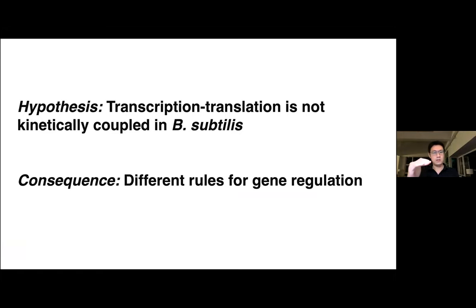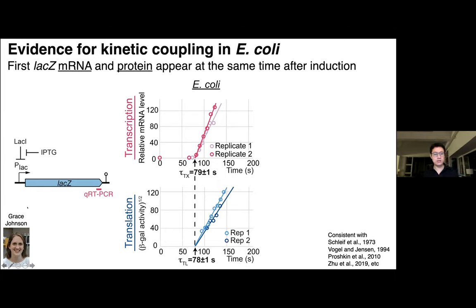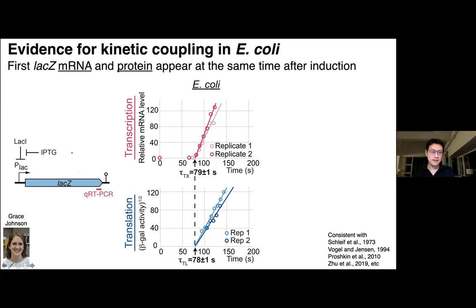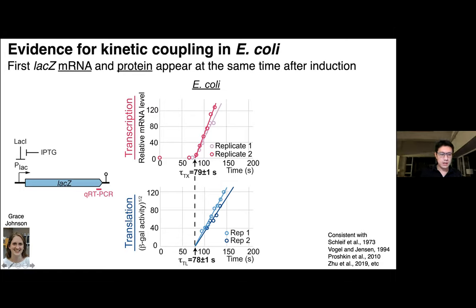I'm going to give you data that confirms these hypotheses and the predictions we made. Another graduate student, Grace Johnson, joined this project. We decided to use a very classic assay to measure kinetic coupling between transcription and translation in E. coli, and see if the same is happening in Bacillus subtilis. This assay is based on a simple induction system where you can turn on transcription really fast with IPTG — IPTG binds to the lac repressor, making it fall off the promoter quickly.